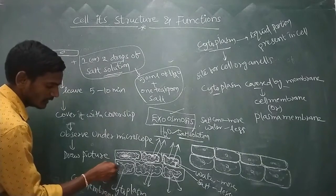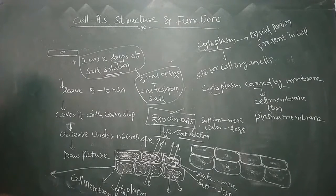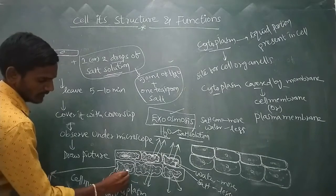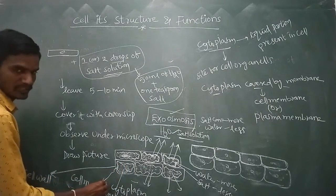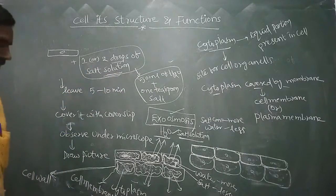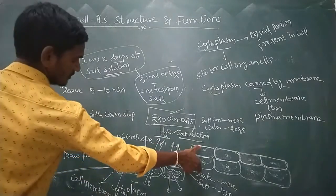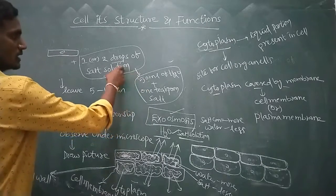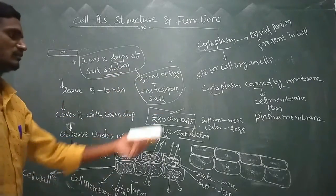Above the cell membrane, another layer is present — that is called the cell wall. The liquid portion (cytoplasm) is covered by the cell membrane, and this cell membrane is covered by a tough layer called the cell wall.